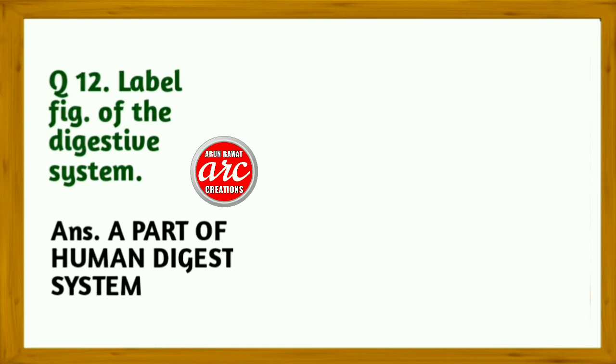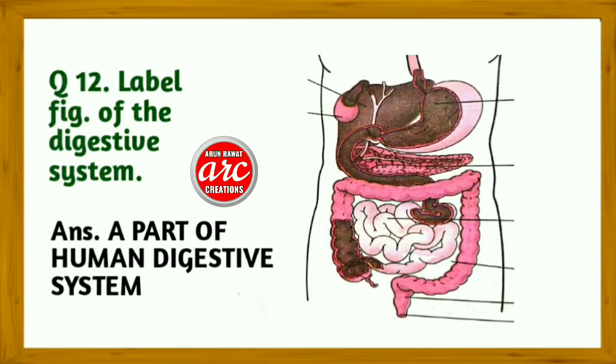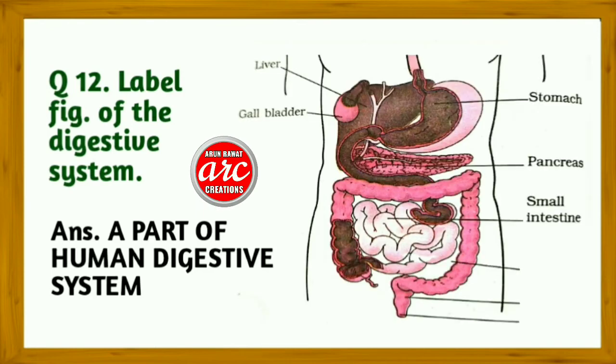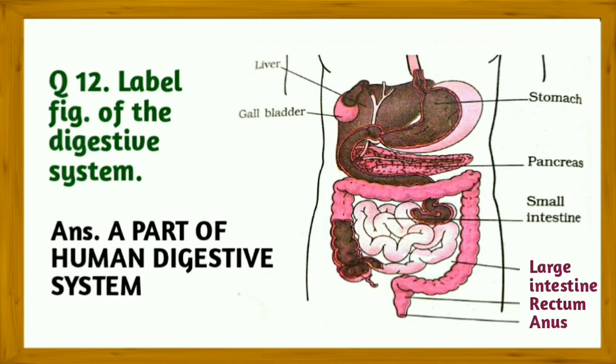Question 12: Label the figure of the digestive system. Answer: The labelled diagram is shown on the screen.